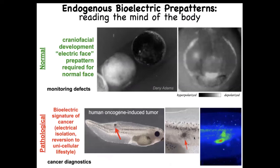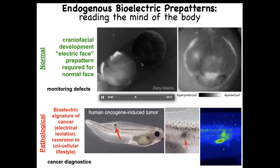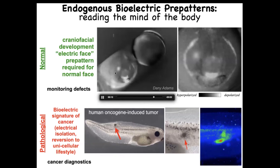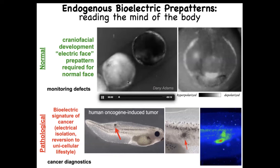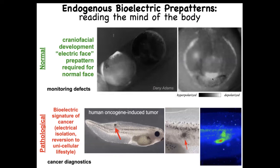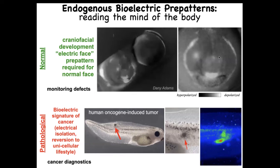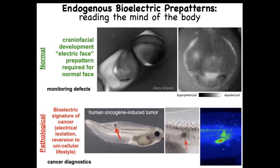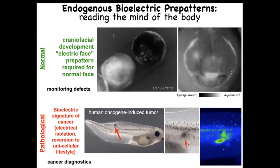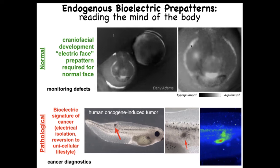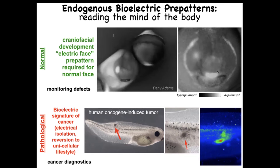I want to show two examples of these bioelectrical patterns. Using a voltage-sensitive fluorescent dye — where grayscale colors represent cell voltage — this is a time-lapse movie of an early frog embryo putting its face together. We call this the electric face. Already, before the genes come on that will pattern the whole structure, you can see where the eye is going to be and where the mouth is going to be. You can already read the electrical pattern memory that's going to guide what happens next. This is required for normal development.